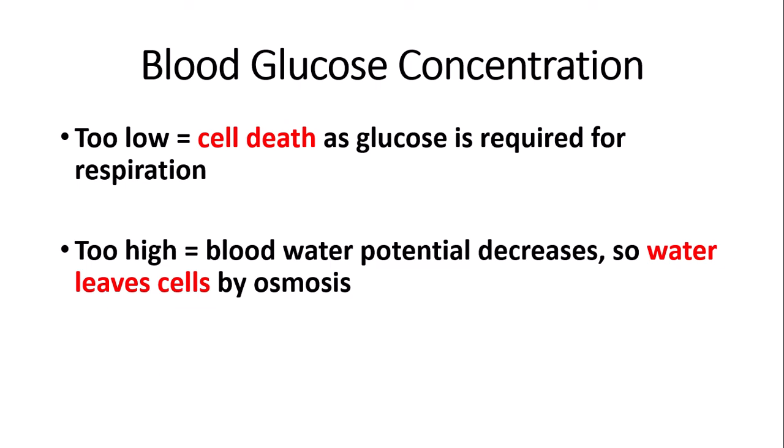If you aren't familiar with water potential, check out our video on transport across cell membranes where I talk about osmosis. As the water potential of the blood is decreased, water leaves the cells by osmosis so the cells can shrivel up. What can sometimes happen is that as water is now in the blood, the water potential of the blood becomes very high, and water can move back into the cells, which can sometimes cause cells to burst. Deviation from the optimal glucose concentration is detrimental, and homeostasis can return it to normal.